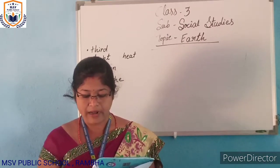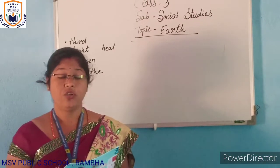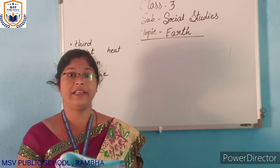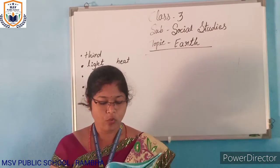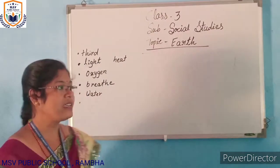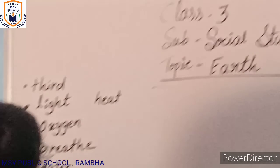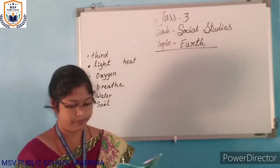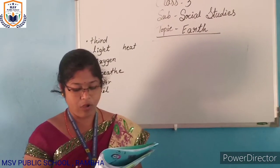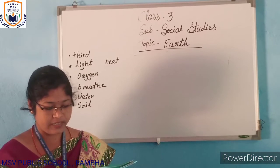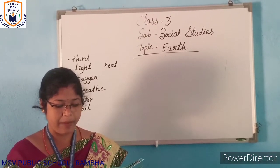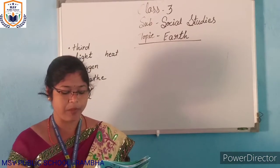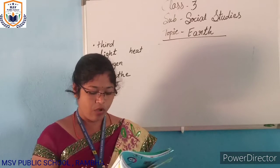We humans live on land. A lot of land is covered by soil. We grow plants in soil. Different species have adapted to their respective habitats. So far, scientists have not discovered life on any other planet.